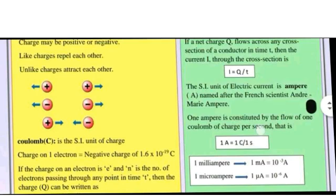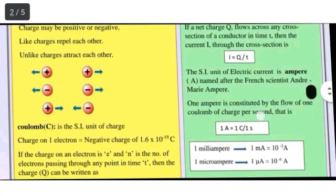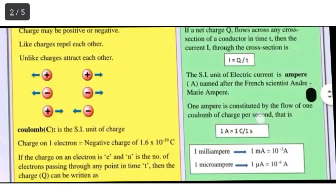The charge of one electron is negative charge of this value: 1.6 into 10 to the power minus 19 coulomb. If the charge on an electron is e and n is the number of electrons passing through any point in time t, then the charge Q can be written as Q = n × e.